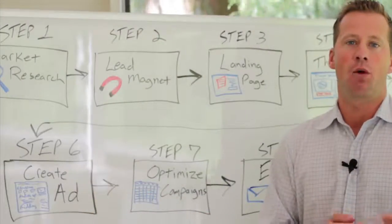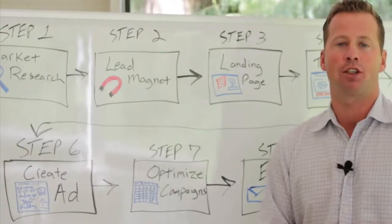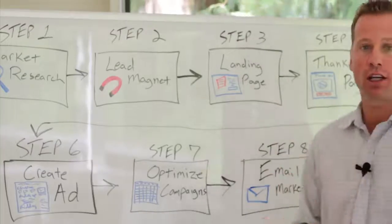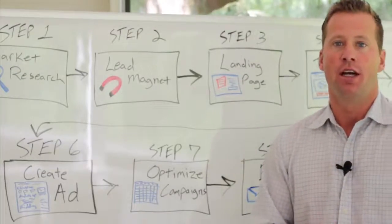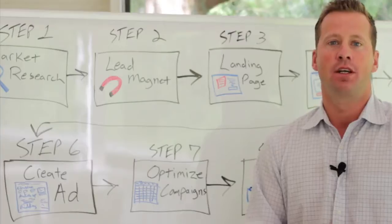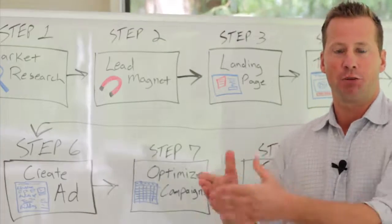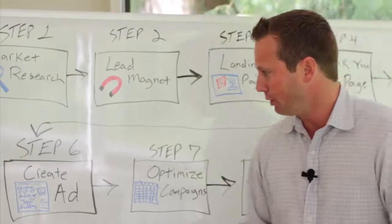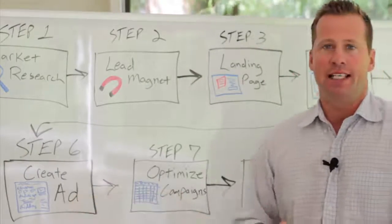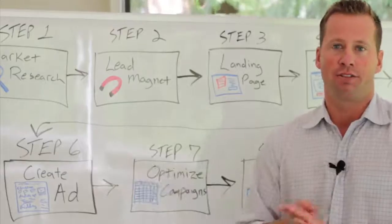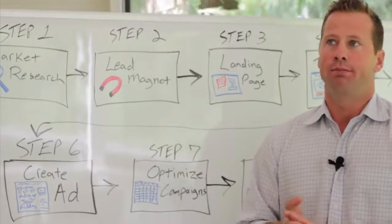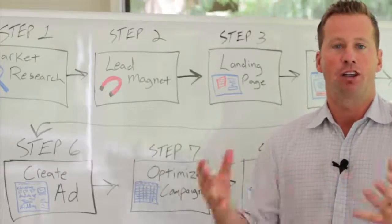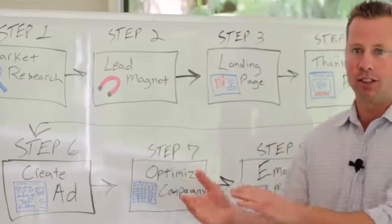Step six is to create your ad. You're going to use the ad manager or the Power Editor to create an ad to amplify that post from step five and put it in front of your exact ideal target audience. You can place that right in the newsfeed or even in the sidebar right column. In the training for this step, I've got a lot more content about your target audience, bidding and budgeting, ad creative, and all those types of things.